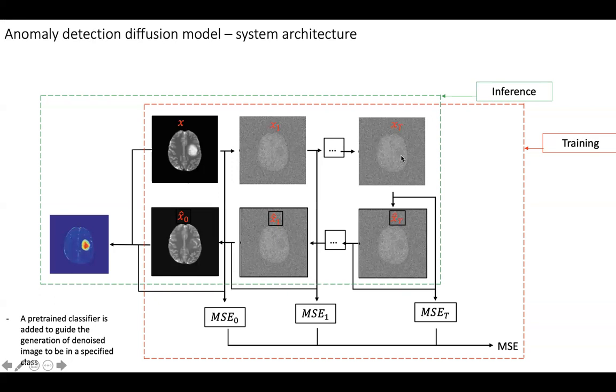And since we have multiple iterations, we have an MSE loss at each iteration, and all of them will be combined together to get the final MSE loss. One extra thing here is the classification loss.